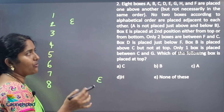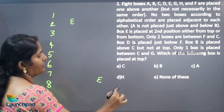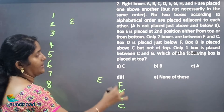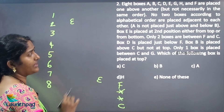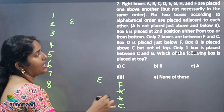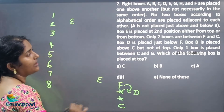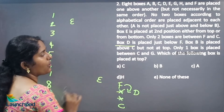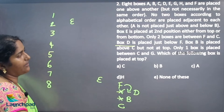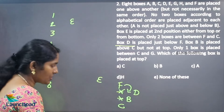From top to bottom — we don't know that. Anyway, we can consider like this. Only 2 boxes are between F and C — F and C having 2 boxes between them. Then box D is placed just below F, so D will be coming just below F. Box B is placed above C. Now, only 1 box is placed between C and G.